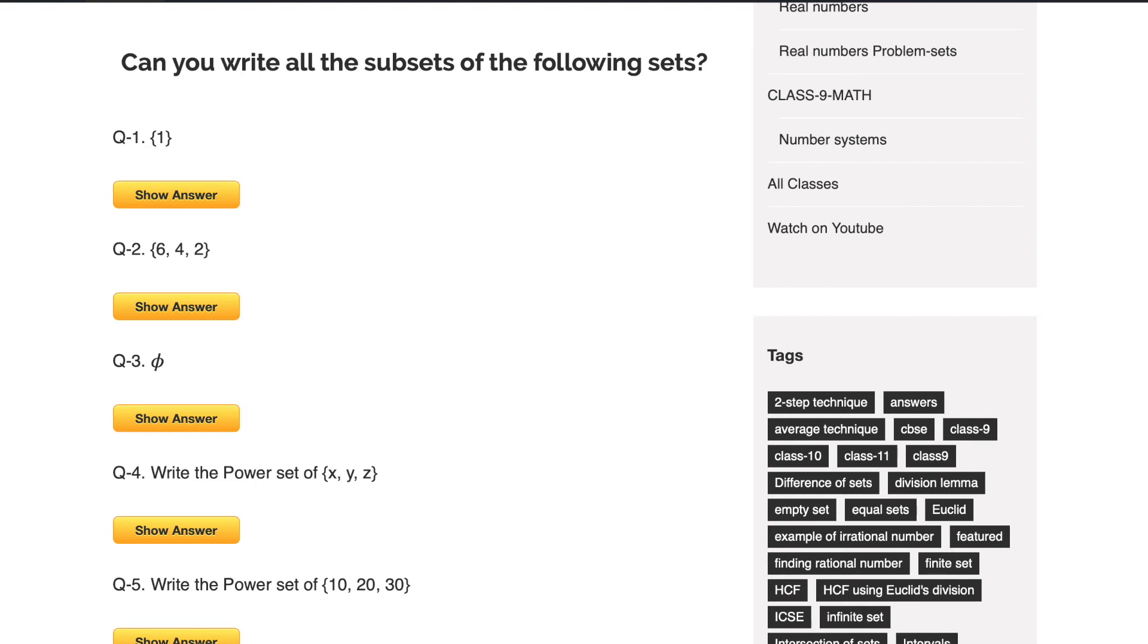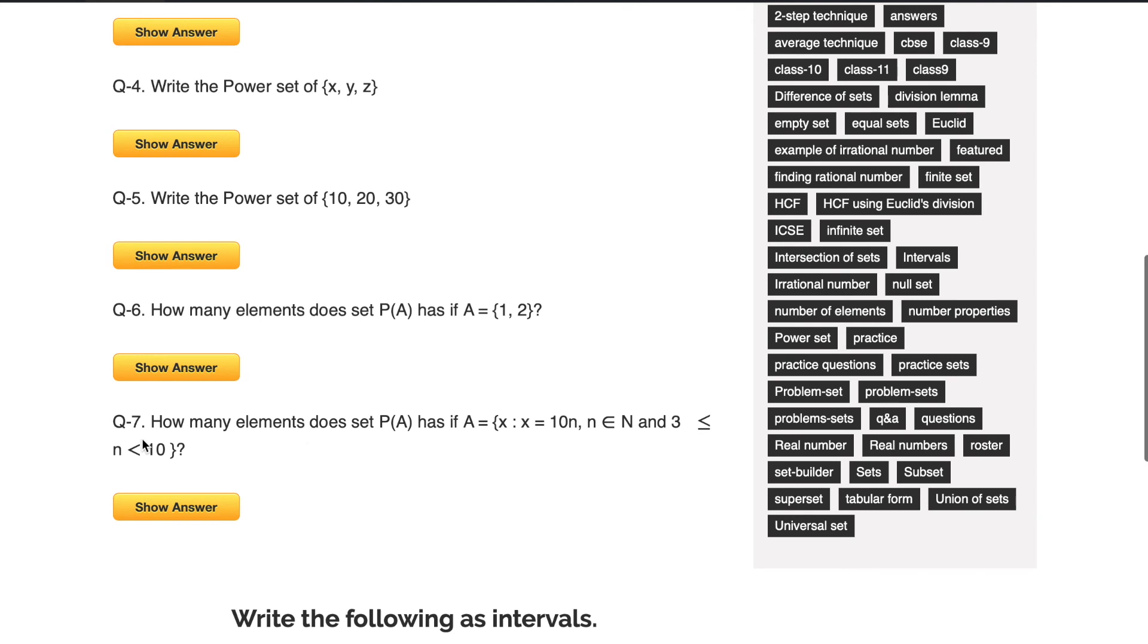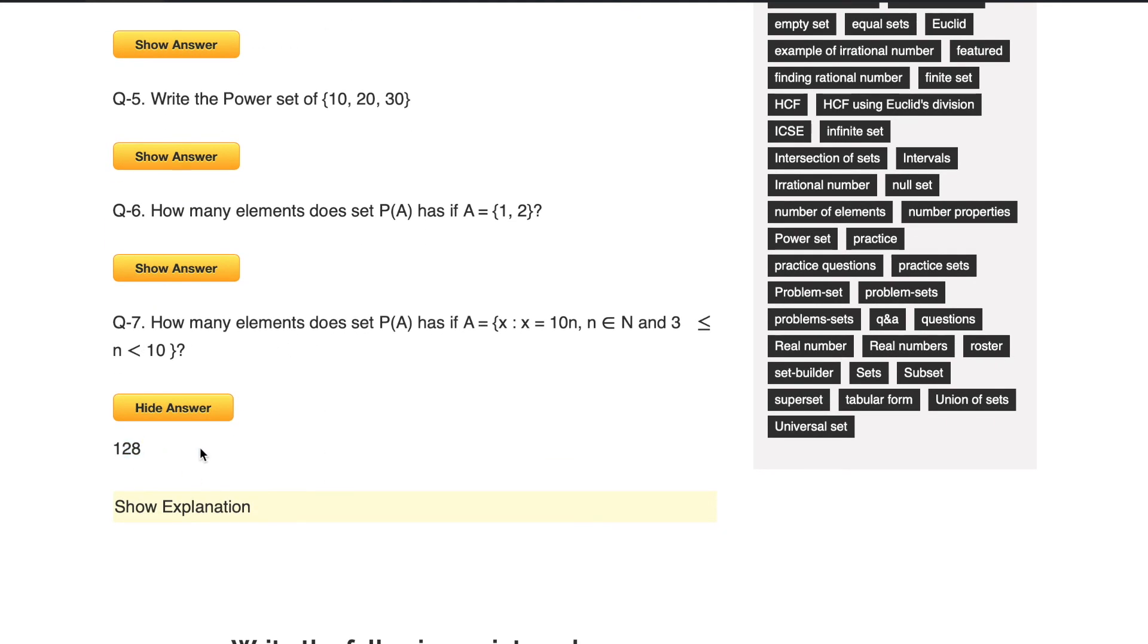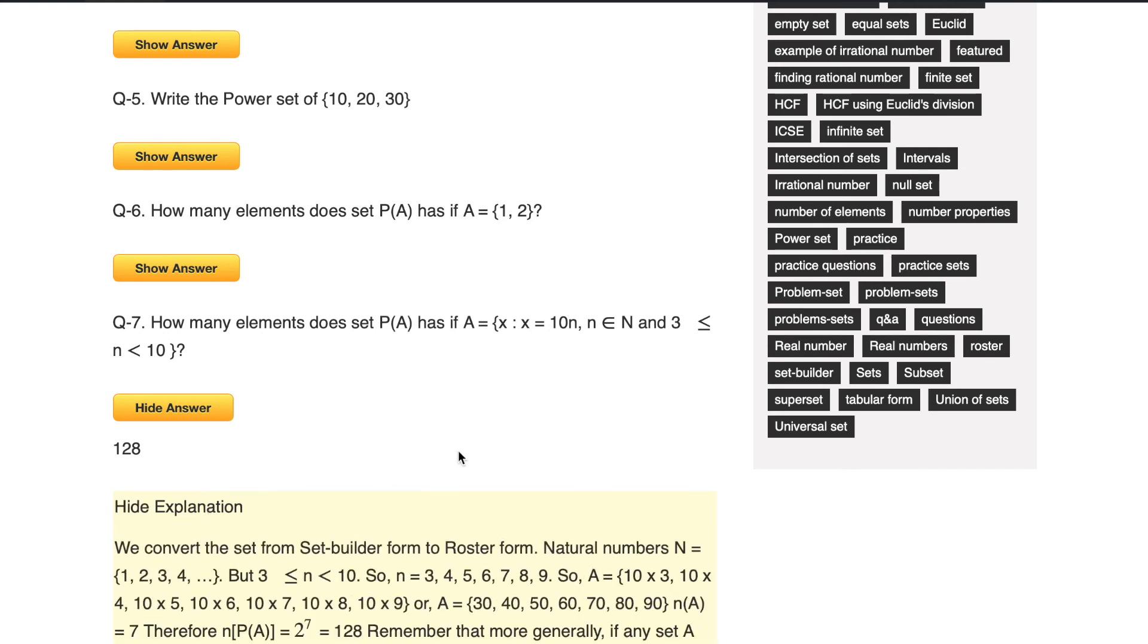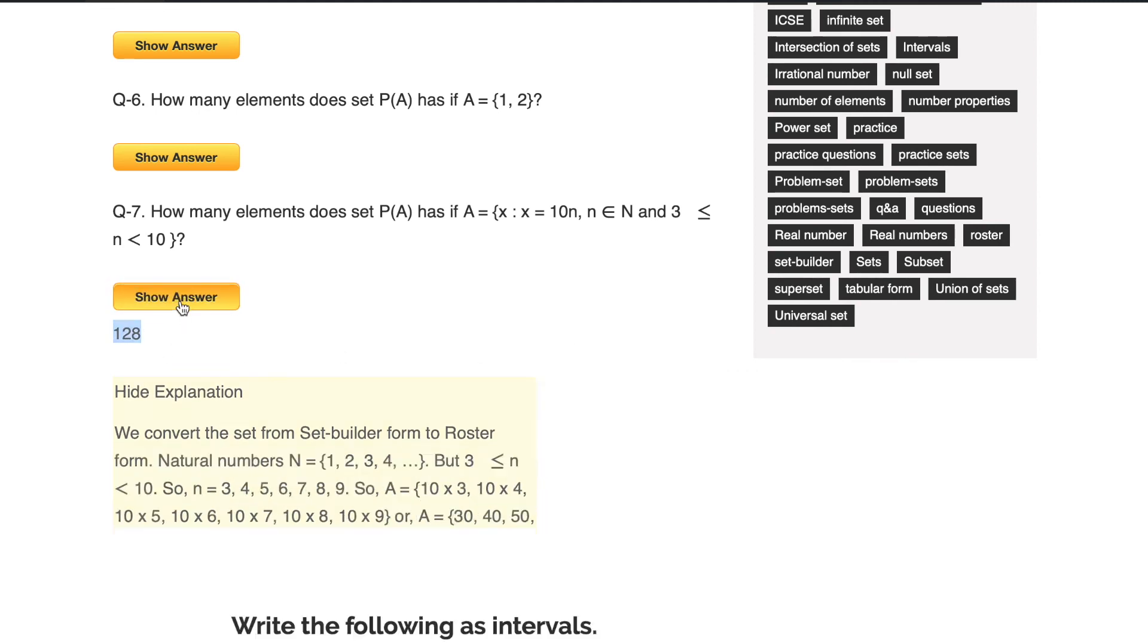Now if you are still not able to figure this out, then simply click on the helpful links which are provided. For example, for question 7, if you want to see the answer, click on it. The answer is given and now you can click on show explanation and you will see the detailed reasoning as to why the answer is 128 in this example.